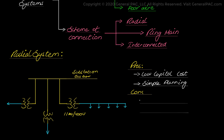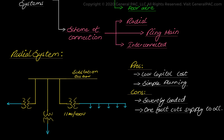However, radial systems also have drawbacks. The portion of the distributor near the feeding point will be severely loaded. The consumers are dependent on a single feeder, so any fault on the feeder or distributors cuts off supply to consumers who are on the other side of the fault, away from the substation. Consumers at the far end of the distributor are subject to voltage fluctuations when the load changes. Due to these limitations, it is preferred to use this system only for short distances.